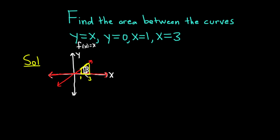No matter where you draw the rectangle between 1 and 3, the height of the rectangle is x. So the area is going to be equal to the definite integral, and we're integrating from 1 to 3, of x, which is our function, which tells us the height of the rectangle, dx.